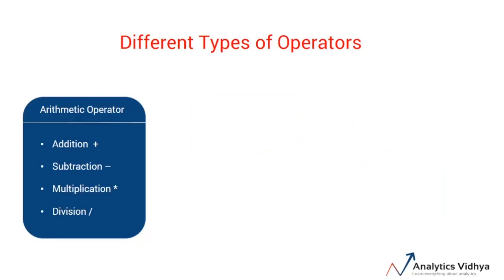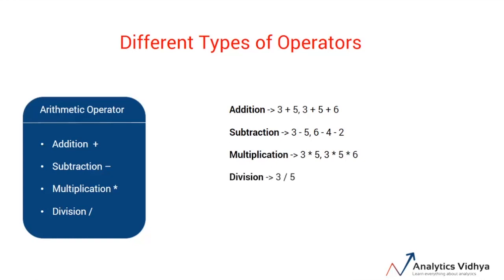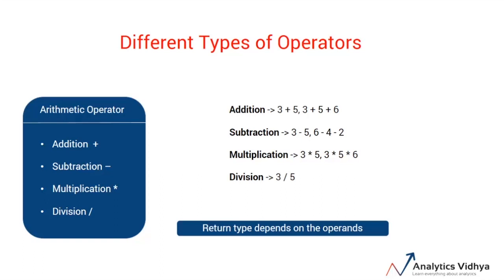Arithmetic operators help us in performing arithmetic tasks like addition of two operands, subtracting the second operand from the first, multiplying two operands, and dividing the first operand by the second. The output type of arithmetic operators depends on the operands. For example, if two numbers are being added, the output is a number. But if we take a string and multiply it by a number, it returns a string — it returns the string that many number of times. But if we add a number to a string, it returns an error. So the return type depends on the operands.